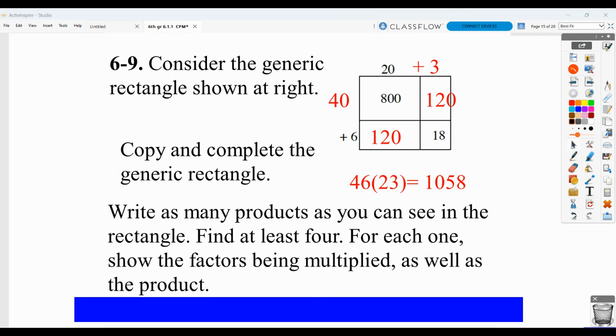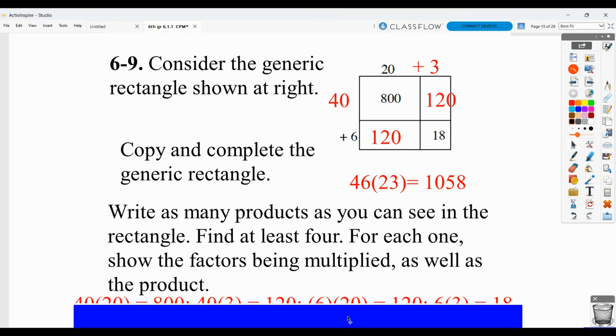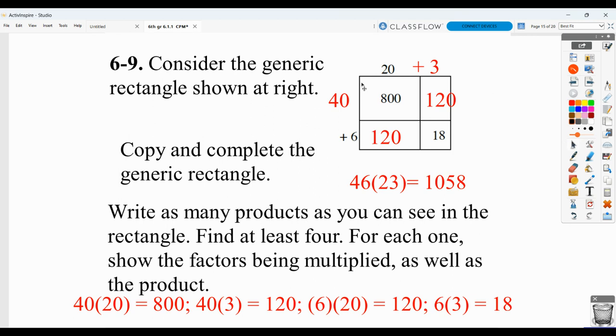Then they want you to write as many products as you can see in the rectangle and then show which factors were being multiplied. So we had 40 times 20 equaling 800. 800 is a product. 40 and 20 are the factors. 40 times 3 gave us a product of 120. 6 times 20 gave us a product of 120. 6 times 3 gave us a product of 18. So again, the factors are what's being multiplied. The product is what we got when we multiplied.